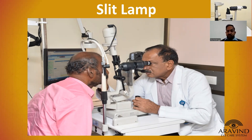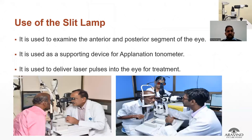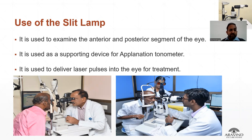The slit lamp is the most commonly used diagnostic equipment by an ophthalmologist today. It provides an illumination and magnification system to see the eye and its various parts. It is used to examine the anterior and posterior segments of the eye. It also acts as a supporting device for an illumination tonometer, which is used to measure the IOP of the eye. Some slit lamps have a camera attachment for slit lamp photography, and it is also used to deliver single spot laser beams at any required area of the eye.